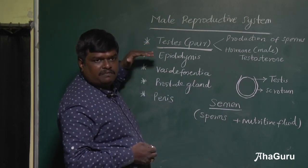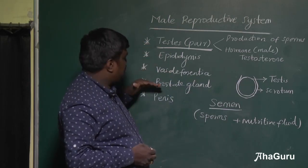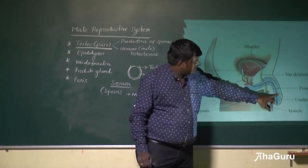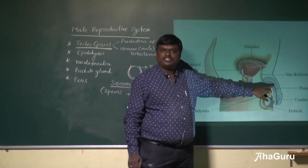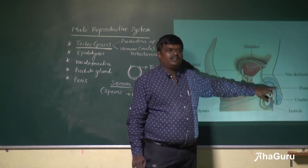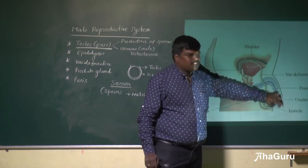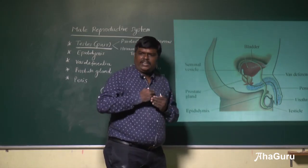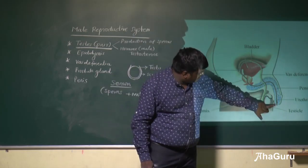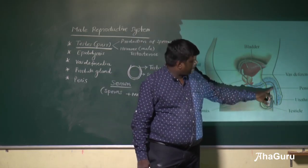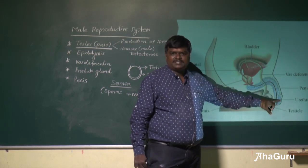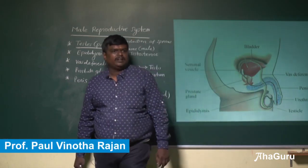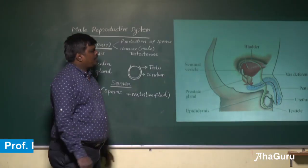We have learned about the functions of the testis, epididymis, vas deferentia, prostate gland, and seminal vesicle. Now the penis — it is a common opening for both urine and the release of sperms, and it is the major copulatory organ. With its help, sperms are released into the female reproductive tract. The opening tip is called the urethra, and it is made up of spongy structures through which sperms are released. This concludes the male reproductive system.